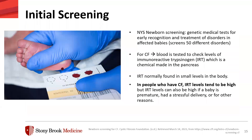Moving on to diagnosis. For initial screening, it differs by state, but in New York state they perform newborn screening — a genetic medical test for early recognition and treatment of disorders — which screens for 50 different disorders, one of which is cystic fibrosis. This is done during the first few days of a baby's life and again a few weeks later, using only a few drops of blood from a heel prick onto a Guthrie card. For cystic fibrosis, the blood is tested for immunoreactive trypsinogen, a chemical made in the pancreas that is normally found in small levels but tends to be higher in CF patients. A positive newborn screening result does not mean a baby has cystic fibrosis — only that further testing is required.